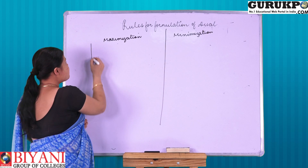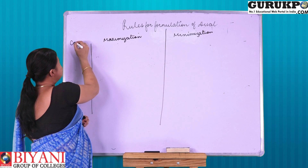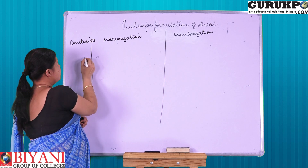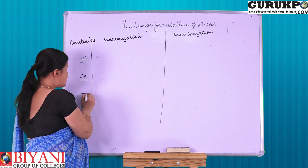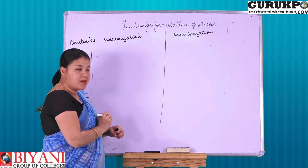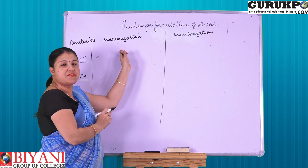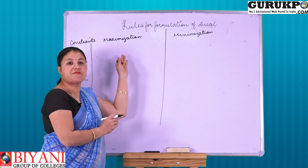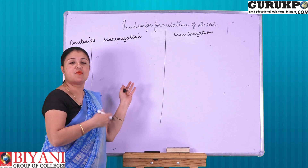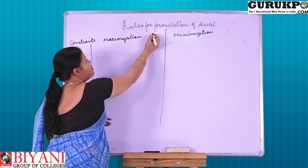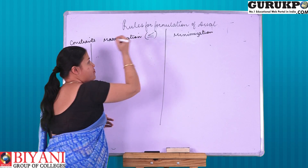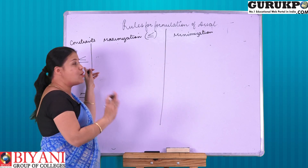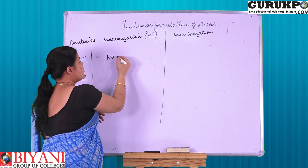Now, there are three types of constraints: maximize, minimize, and equal. Now, if the problem is in maximization form, then we have to find that the signs of each and every equation given in the constraint should be in this particular form. If the equation has a maximization sign, then there is no need to change the sign.